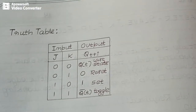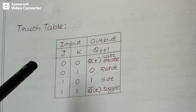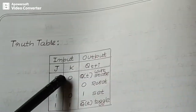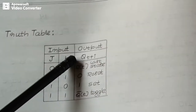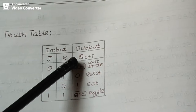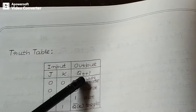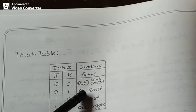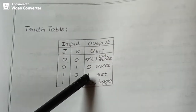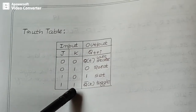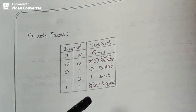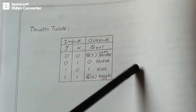This is the truth table for JK master-slave. When J and K are both 0, the output follows the last state Qt. When J is 0 and K is 1, the output is reset to 0. When J is 1 and K is 0, the output is set to 1. When J is 1 and K is 1, the output toggles.